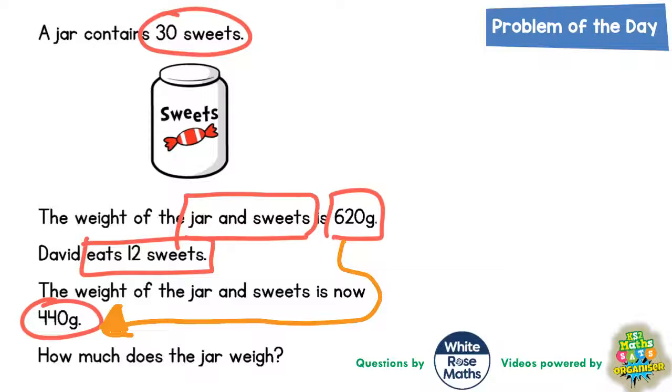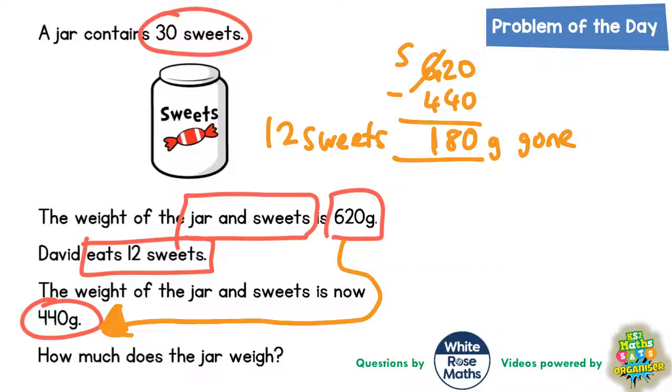So if we do the 620 grams when the jar had all the sweets in, take away the 440 grams when 12 of the sweets have gone, we'll see what is left. So 0 take away 0 is 0, 2 take away 4 we can't do, so we borrow. 12 take away 4 is 8, and 5 take away 4 is 1. So basically 180 grams has gone from the jar, but that was worth 12 sweets. So that 12 sweets must be what the 180 grams is worth.